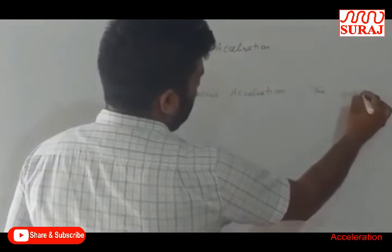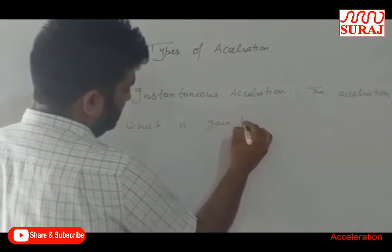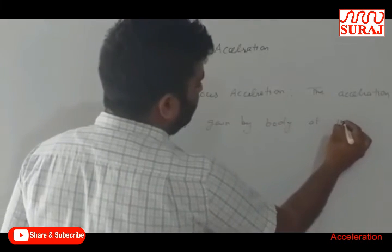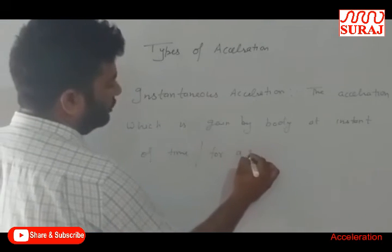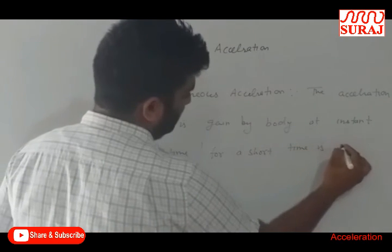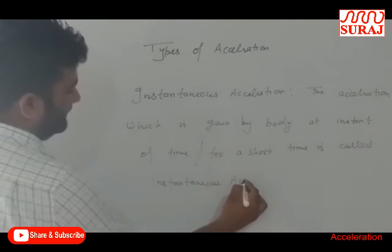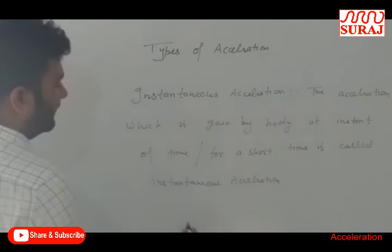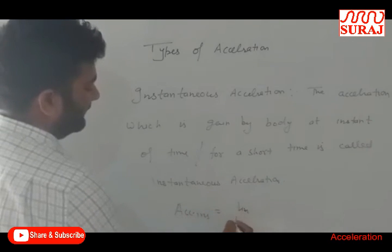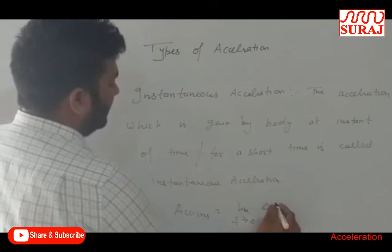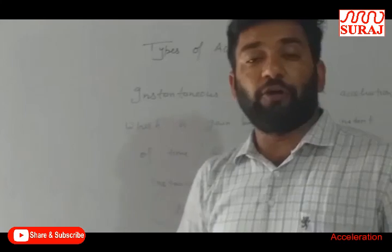Instantaneous acceleration is the acceleration gained by a body at any instant of time, or we can say for a very short time interval. Instantaneous acceleration is equal to the limit as Δt tends to 0 of Δv/Δt. This is the formula for instantaneous acceleration.